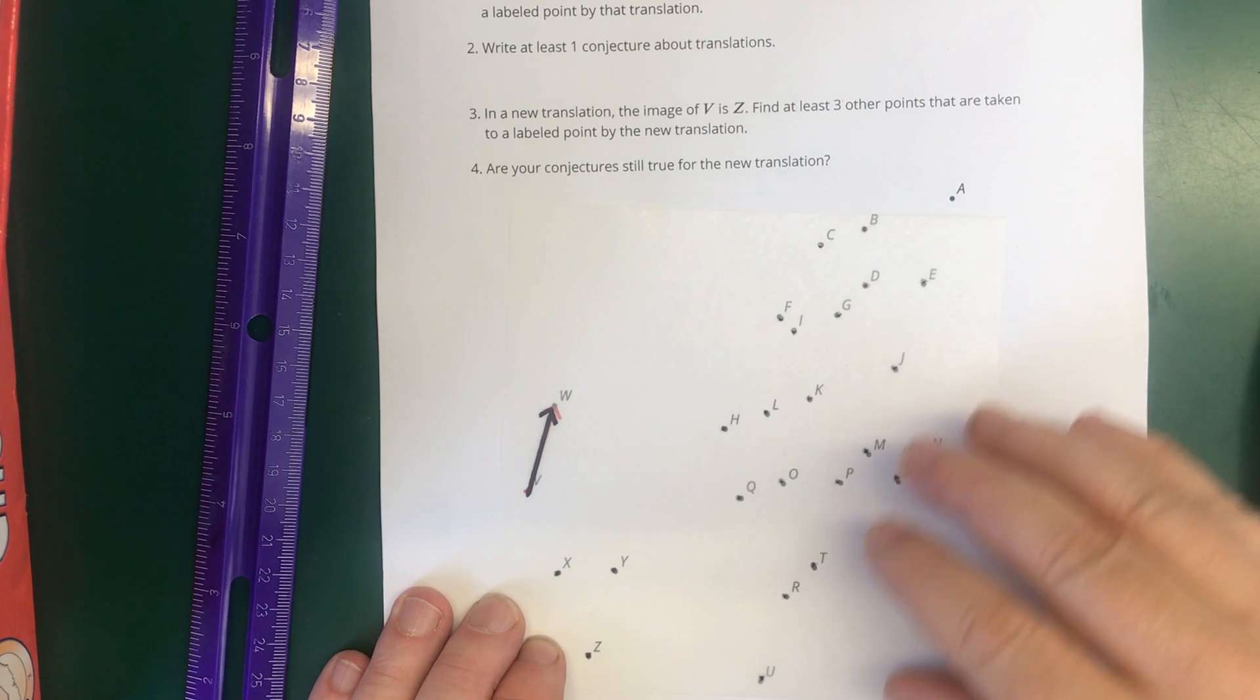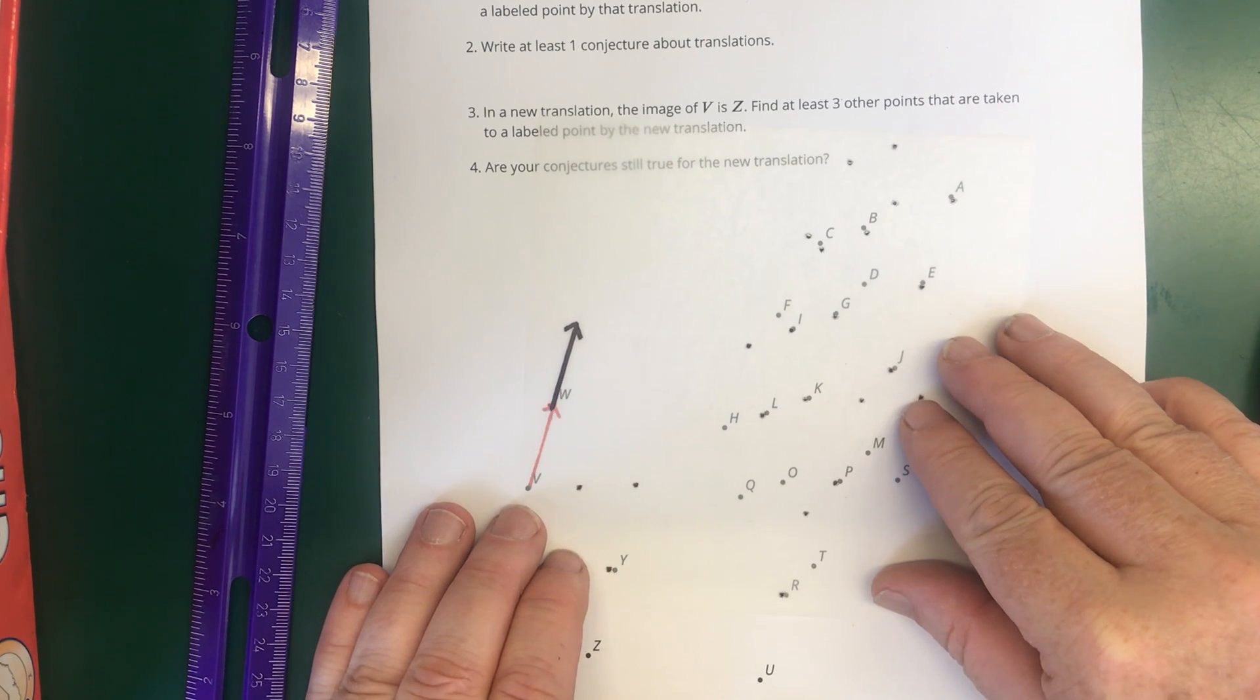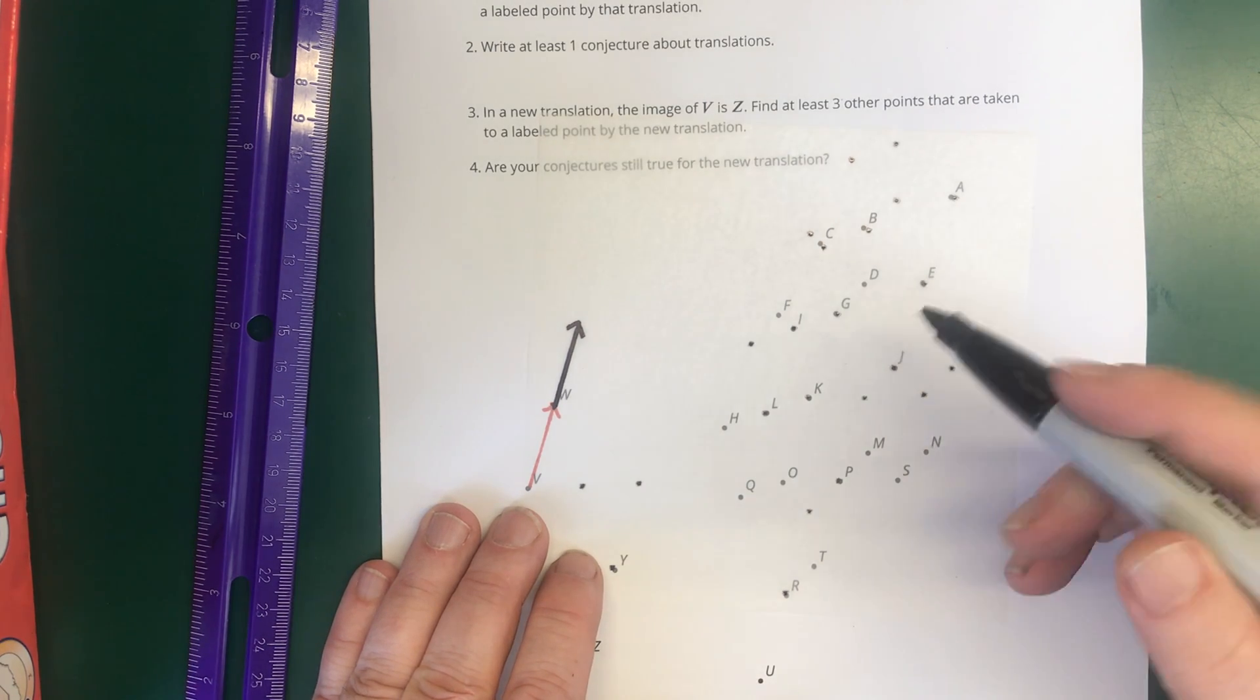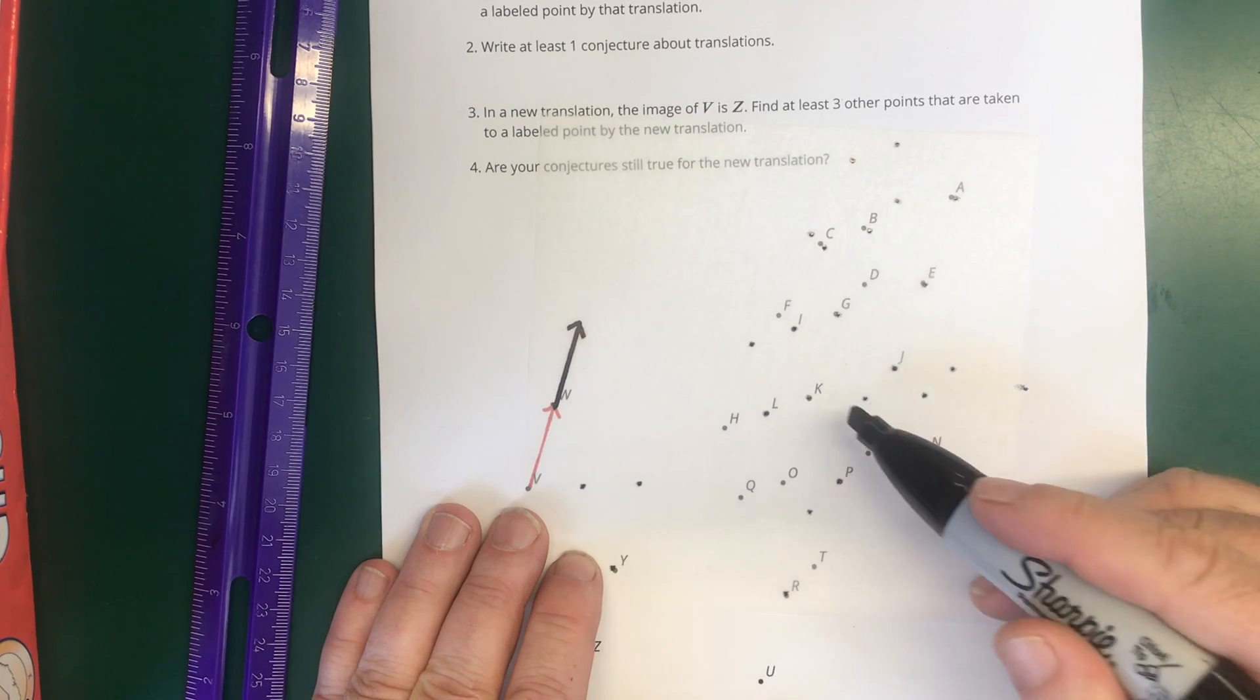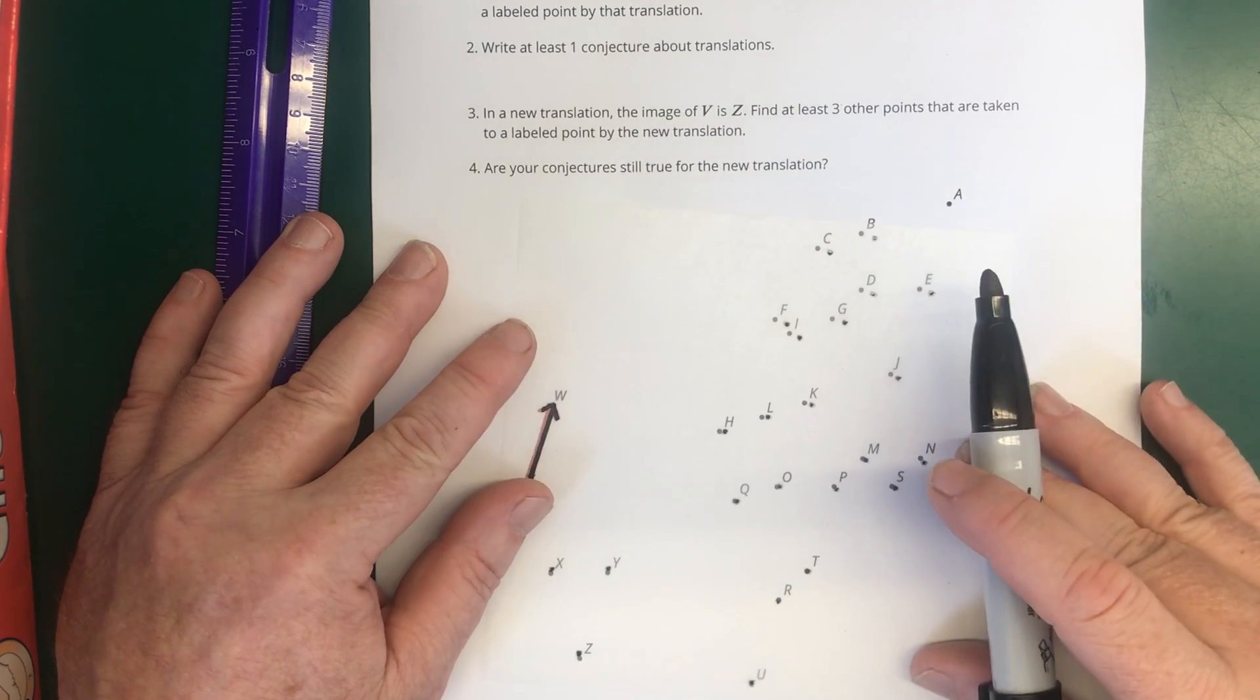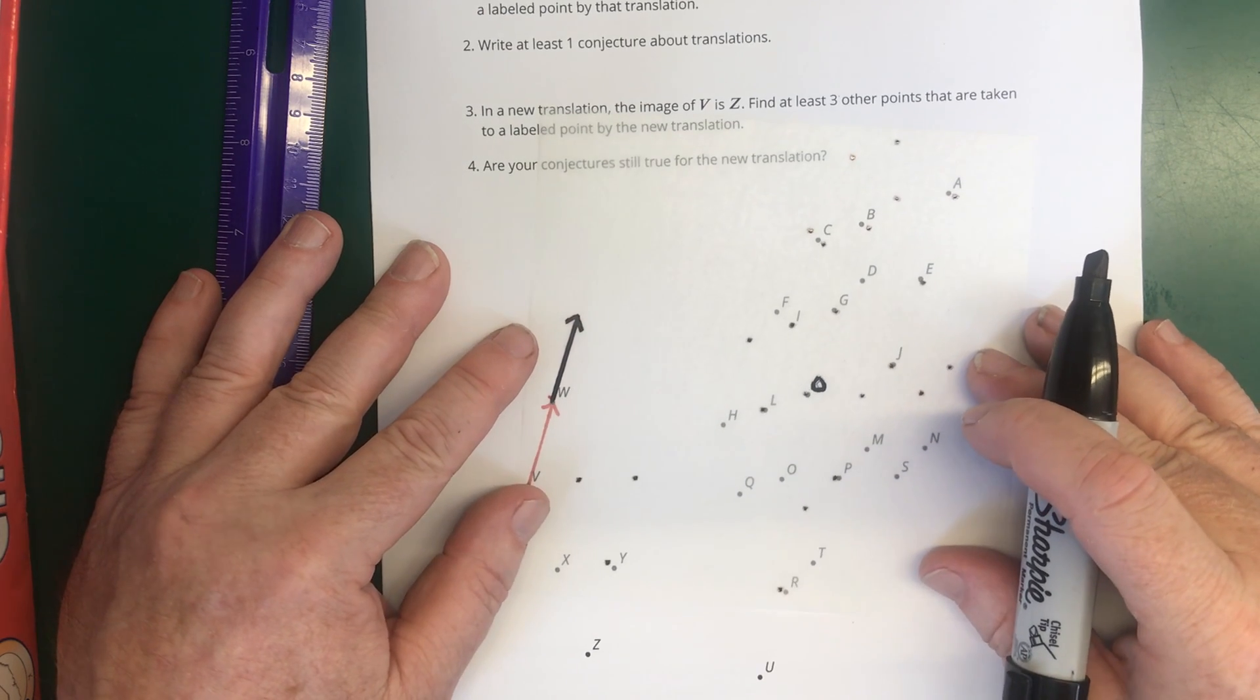So let's go ahead and let's slide V to W. And let's be careful not to twist it as we slide it. And there we go. So it looks like maybe this point that's on K now. Which point was that? That was O. So it looks like maybe O moved to K. So I'm going to write O here. O moves up to K.